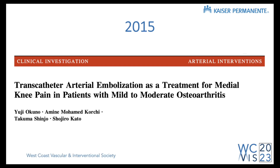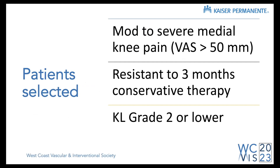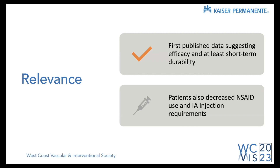In 2015, it was first done by Dr. Okuno in Japan — using artery embolization in the setting of OA. It had always been done for hemarthrosis, but this was the first published use in OA. Those patients had severe pain, were resistant to conservative therapy including injections and physical therapy, and radiographically their disease wasn't that severe. It was the first study showing short-term efficacy and good short-term durability, and patients decreased their NSAID use and subsequent intra-articular injection requirements.